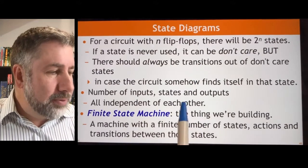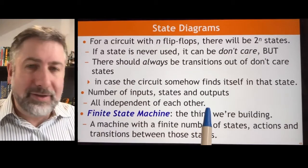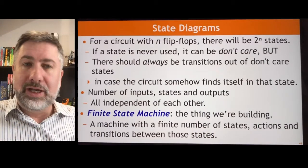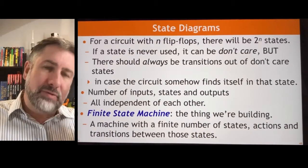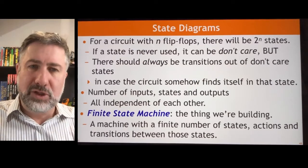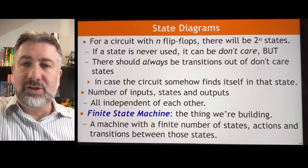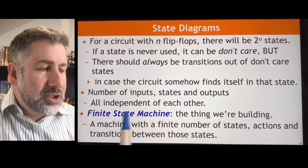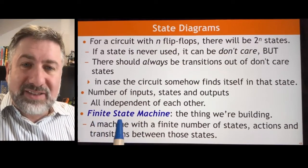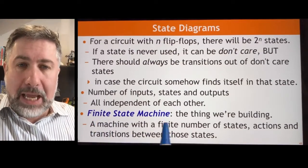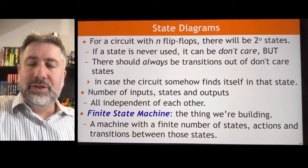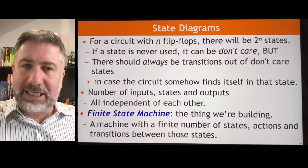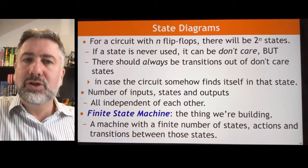The number of inputs, states, and outputs are all going to be independent of each other. You could have five inputs and two states and three outputs, or one input and four states and one output — all of these things are independent. What we're actually constructing is called a finite state machine, or FSM. This is a machine that has a finite number of states and there are transitions that get you from one state to another.